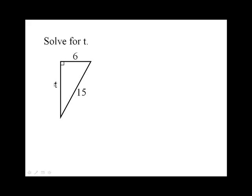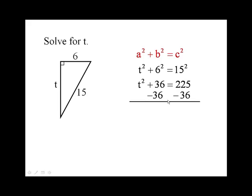Another example. This time we're solving for T, one of the legs. So the Pythagorean theorem is A squared plus B squared equals C squared. So we have T squared plus 6 squared equals 15 squared. So T squared plus 36 equals 225. Subtract the 36 from both sides and T squared equals 189. Take the square root and T is approximately 13.7.